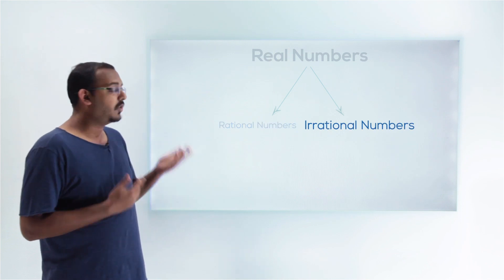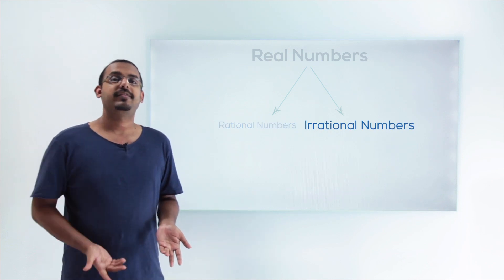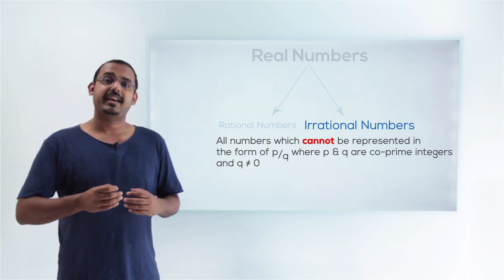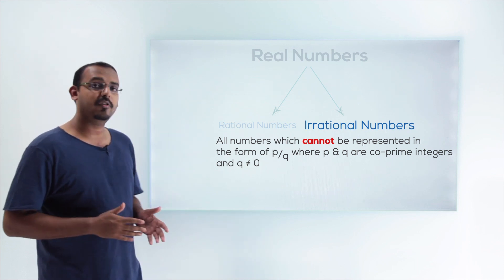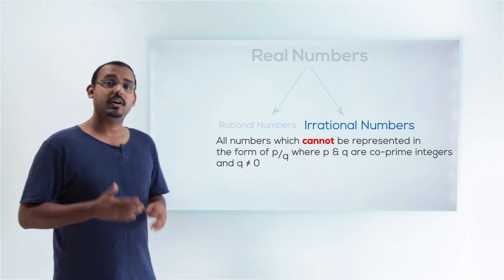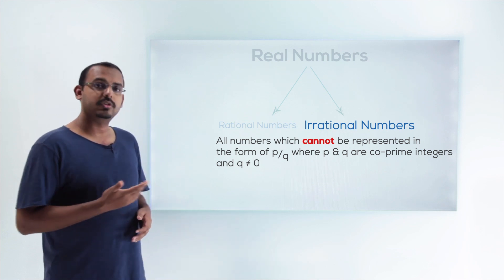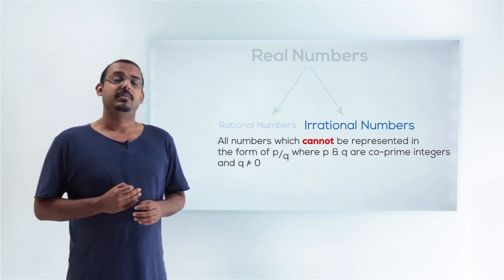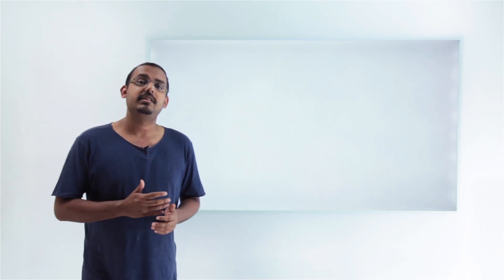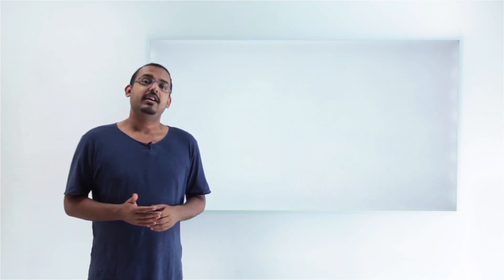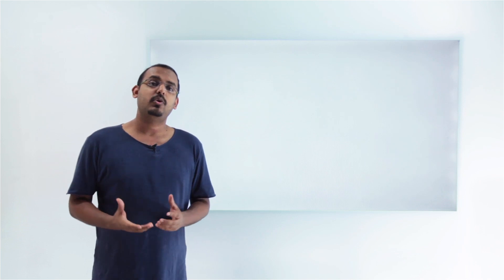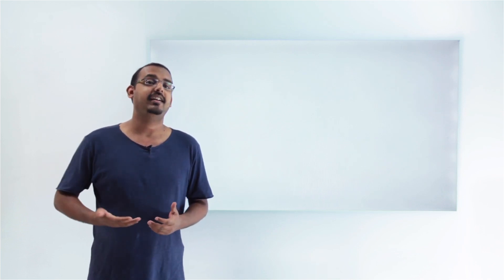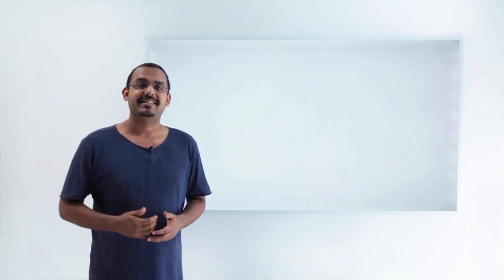All the numbers which cannot be represented in this form are what we call irrational numbers. Any number which cannot be represented in the form of P by Q, where P and Q are both co-prime integers and Q is not equal to 0, is called an irrational number. In later videos, we'll learn about more properties shown by rational numbers and irrational numbers. See you in the next lecture.